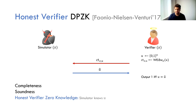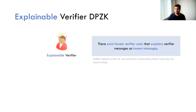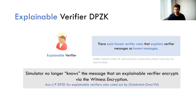How do we get from here to malicious verifier DPZK? We take an intermediate step: explainable verifier DPZK. Explainable verifiers can behave maliciously, but all the messages the verifier sent can be explained using honest verifier coins. Unlike semi-malicious adversaries, these coins might actually be hard to find. One important consequence is that the simulator no longer knows the message that an explainable verifier encrypts, so our previous simulation strategy won't work. In fact, the Goldreich-Oren impossibility already implies that auxiliary input DPZK for explainable verifiers is impossible, making progress with explainable verifiers an important step toward handling malicious verifiers.